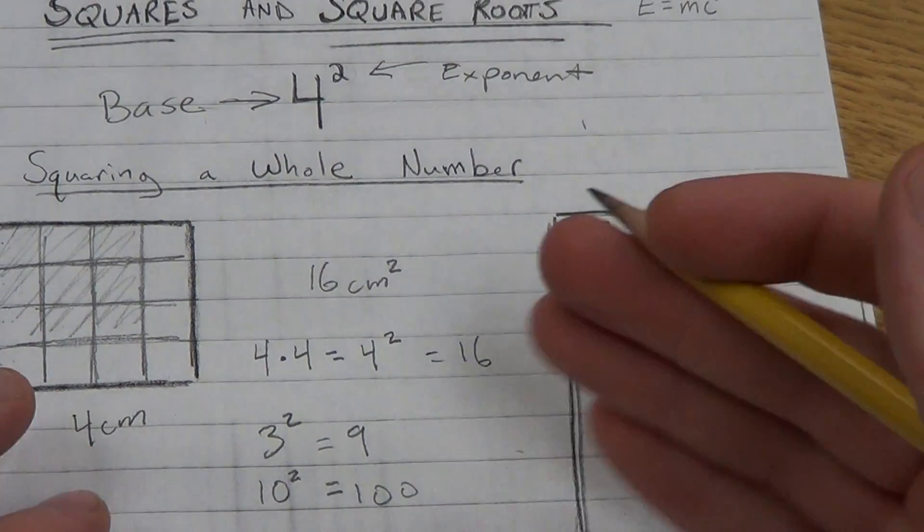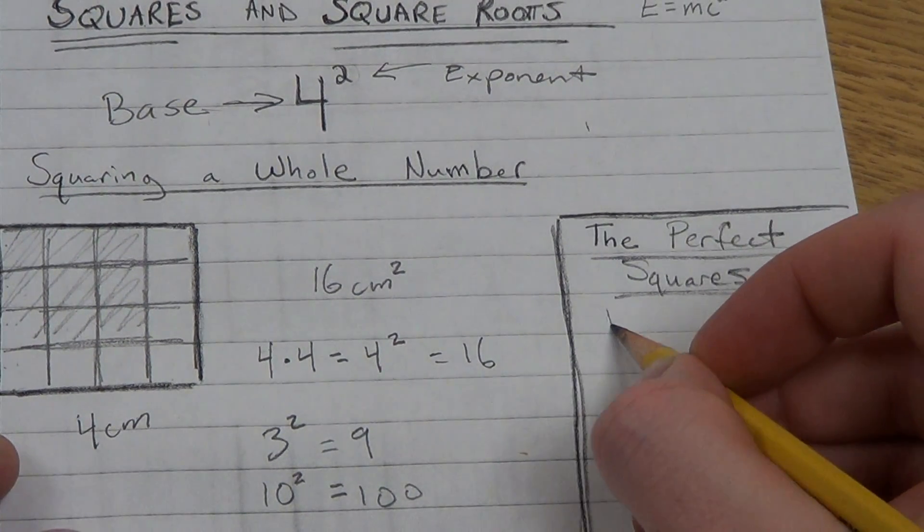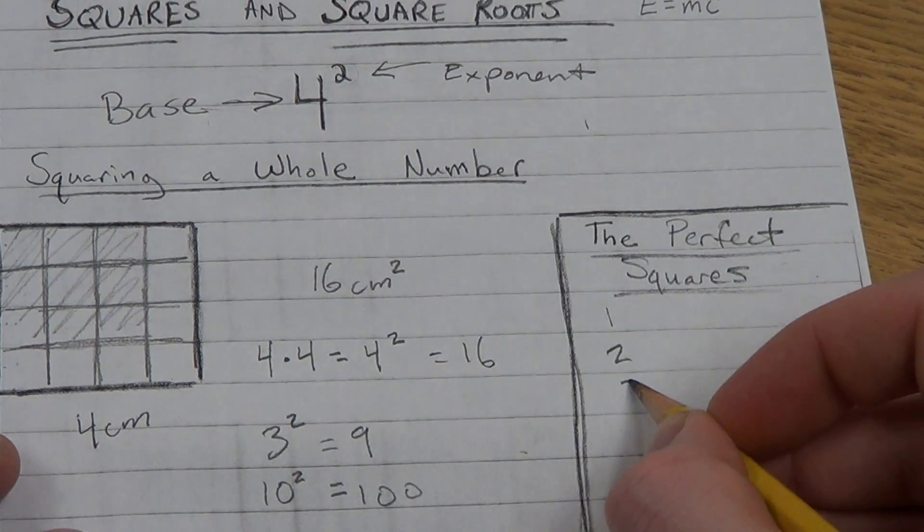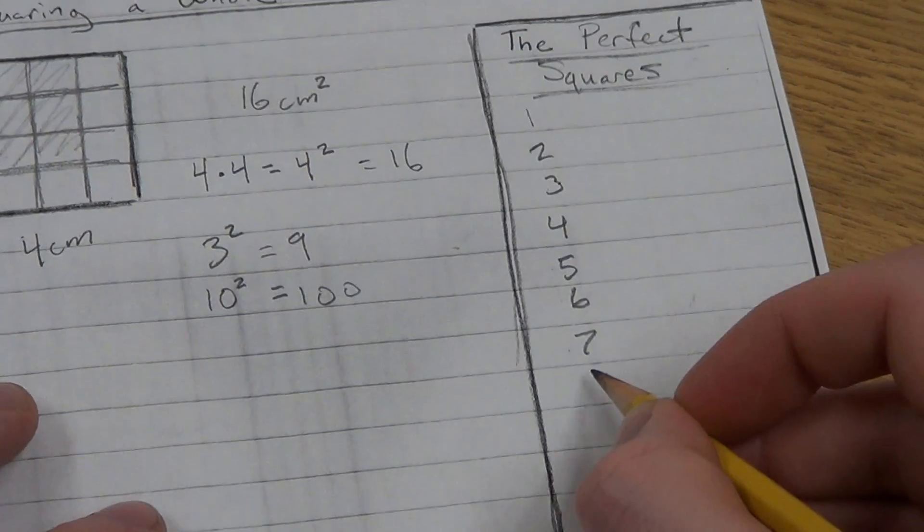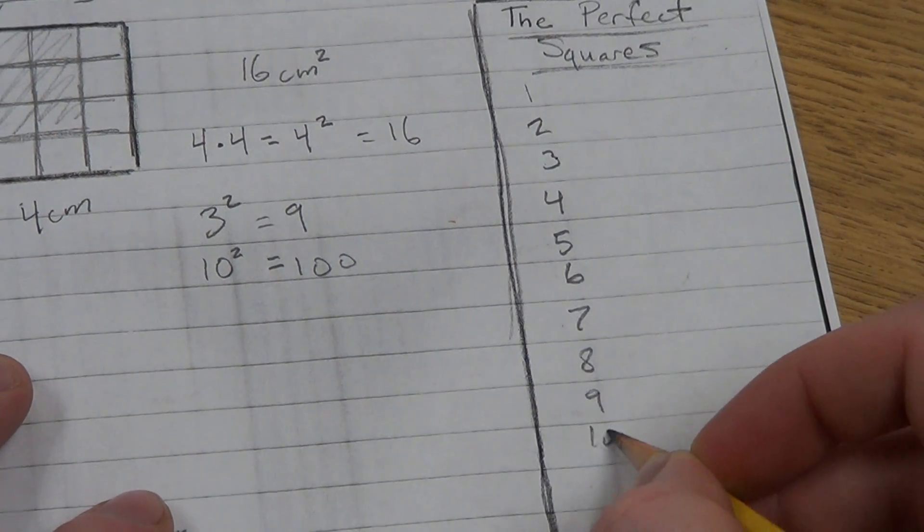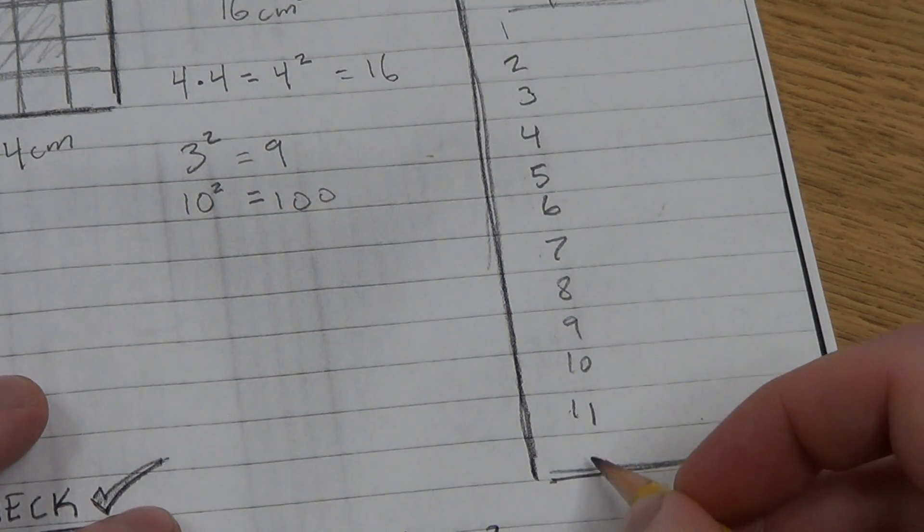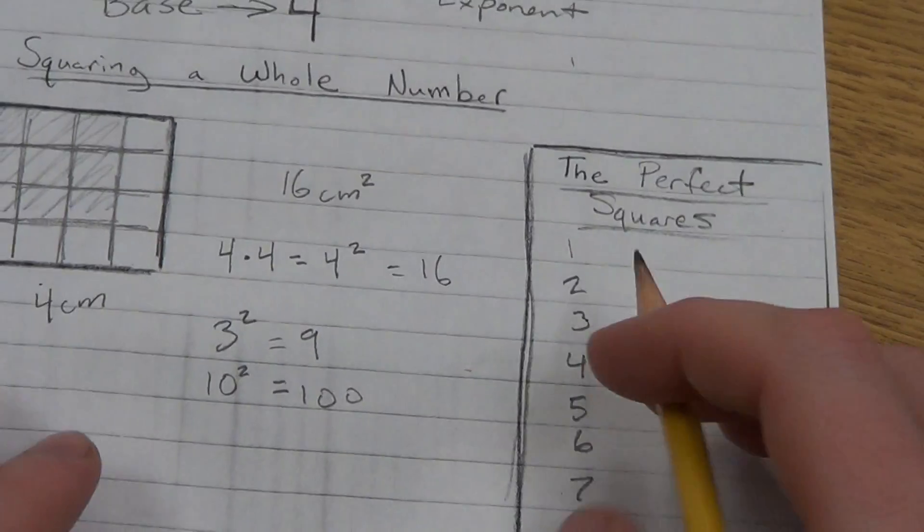If we take all the whole numbers starting with 1. So let's take 1, 2, 3, 4, 5, 6, 7, 8, 9, 10, 11, and 12. We'll stop at 12. Now, I'm going to square all of these numbers.